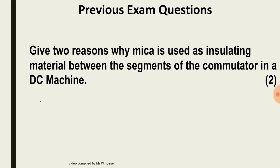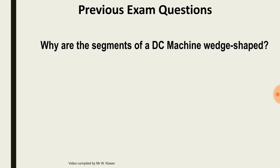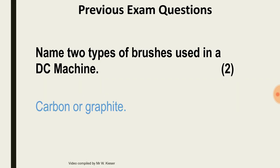Give two reasons why mica is used as an insulating material between the segments of the commutator: mica is a good insulating material and can withstand high temperatures. Why are the segments of a DC machine commutator wedge-shaped? The commutator segments are wedge-shaped so as to prevent them from moving out of position due to the centrifugal force of the armature. Name two types of brushes used in a DC machine: carbon and graphite.